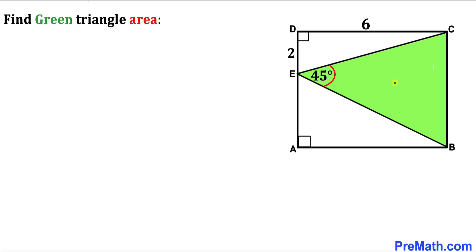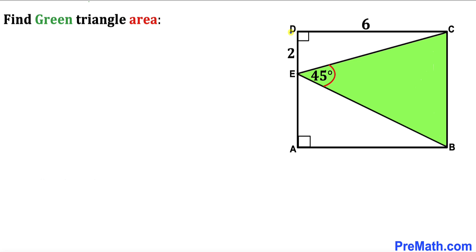Welcome to pre-math. In this video we have a green triangle BEC fully inscribed in a rectangle ABCD such that angle BEC is 45 degrees. The side length of this rectangle is 6 units, segment ED is 2 units, and our task is to calculate the area of this green shaded triangle.